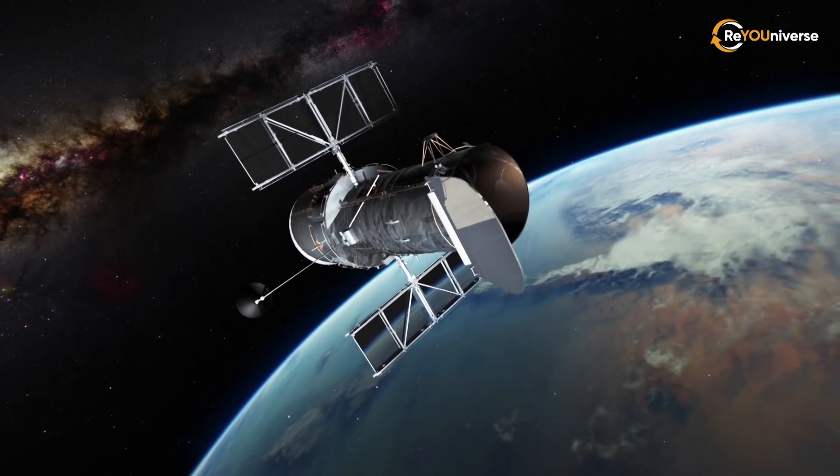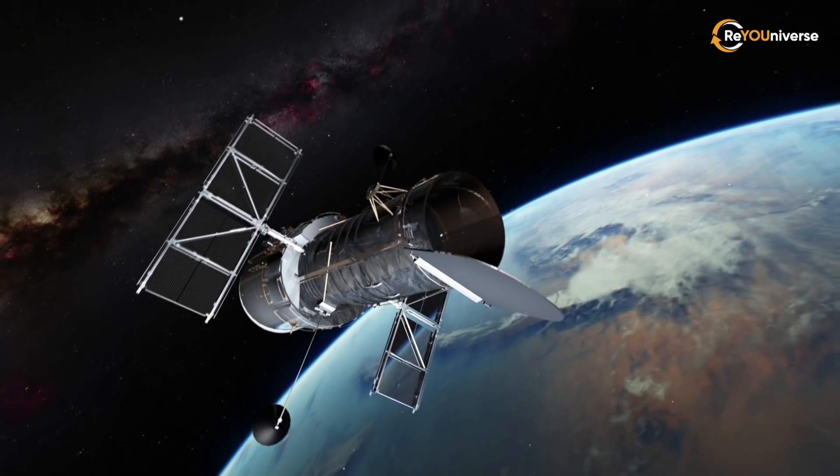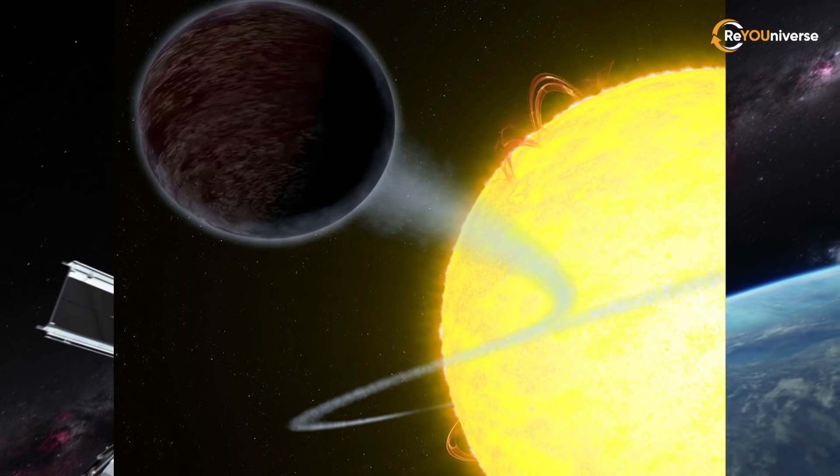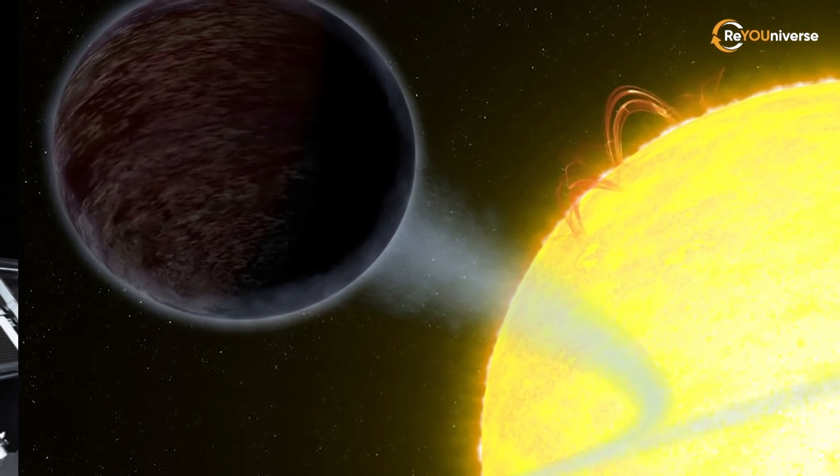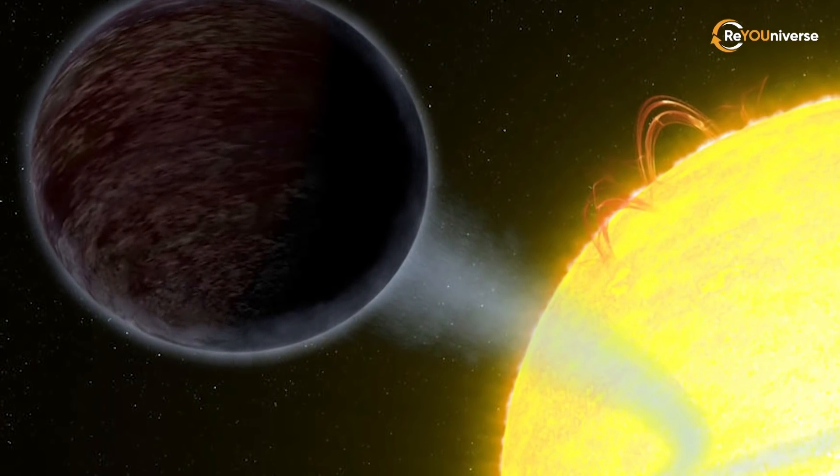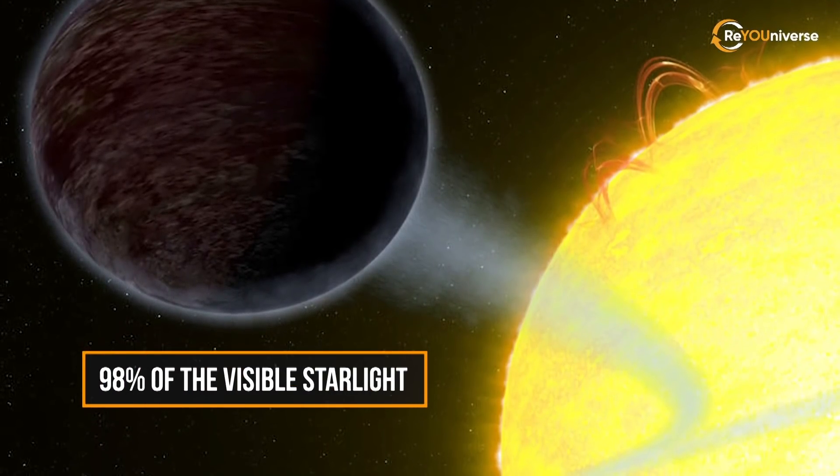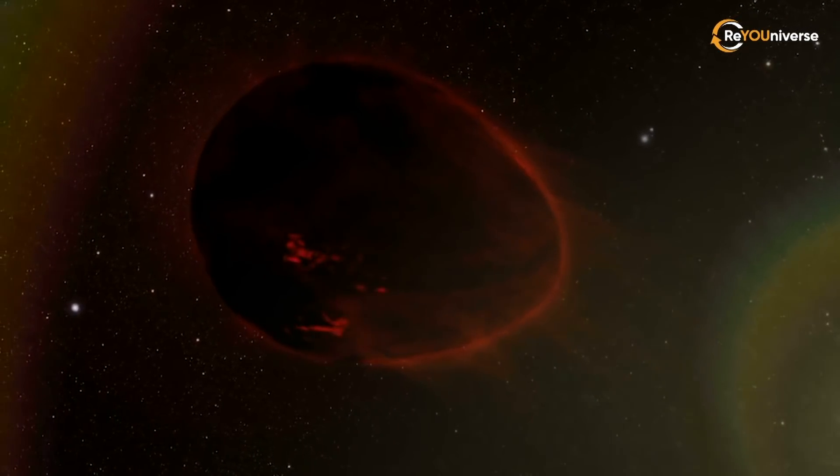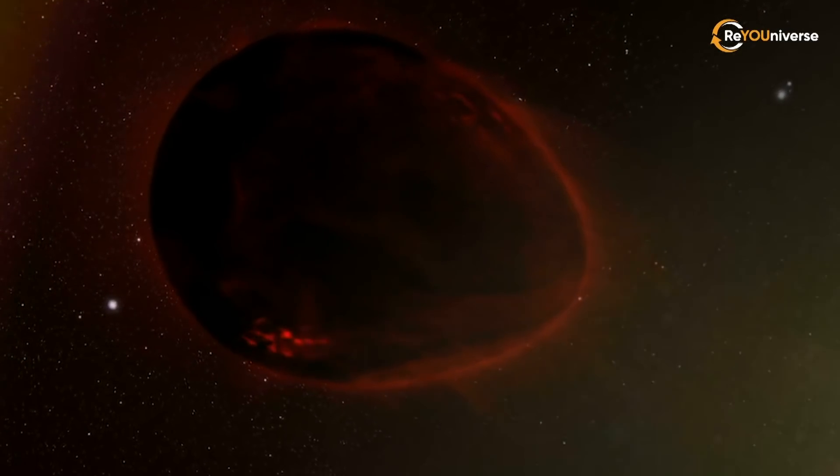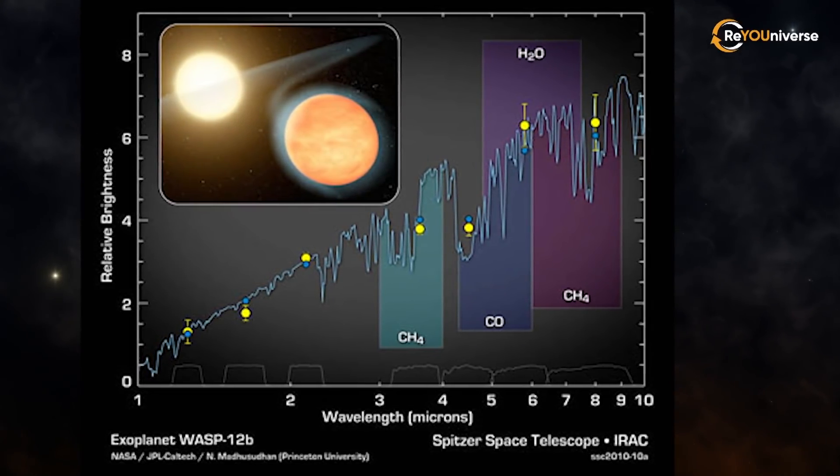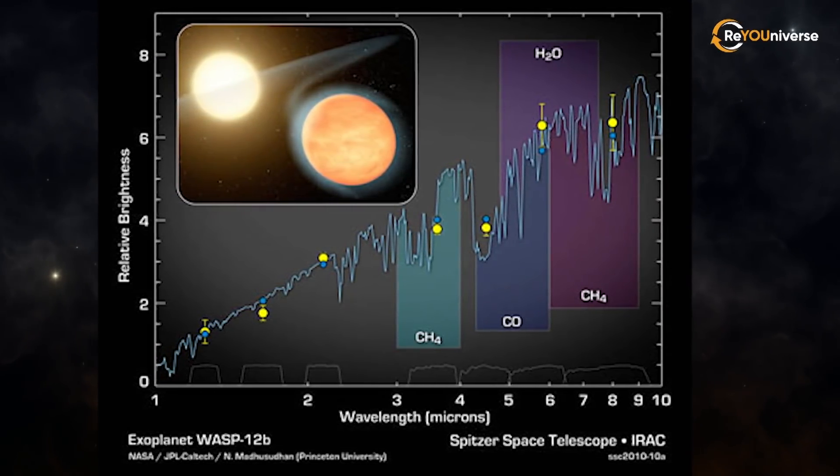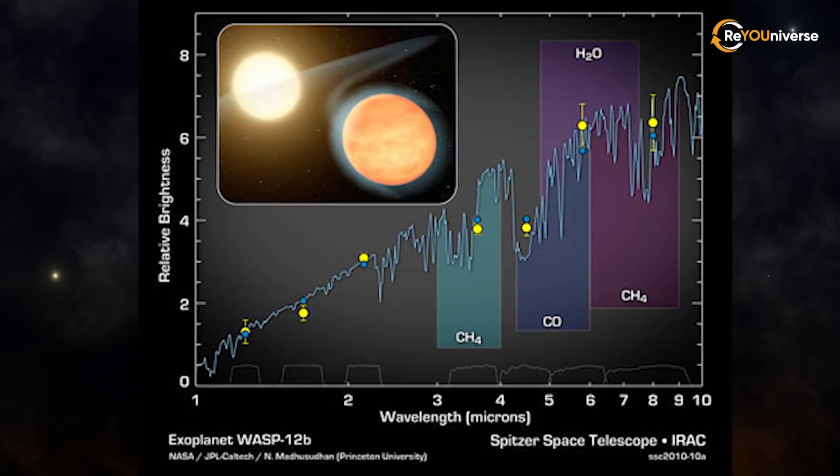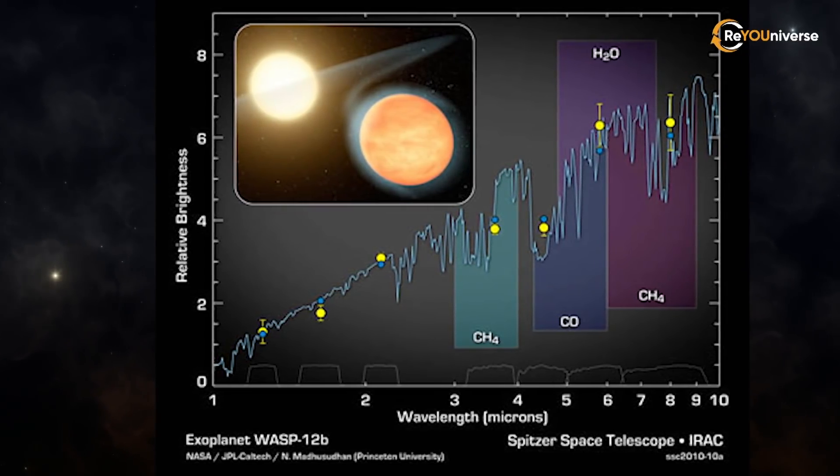NASA's Hubble Space Telescope has observed a planet outside our solar system that looks as black as fresh asphalt because it eats light rather than reflecting it back into space. This light-eating prowess is due to the planet's unique capability to trap at least 98 percent of visible starlight falling into its atmosphere. The planet's atmosphere is so hot that most molecules are unable to survive on the blistering day side of the planet. Therefore, clouds probably cannot form to reflect light back into space. Instead, incoming light penetrates deep into the planet's atmosphere, where it is absorbed by hydrogen atoms and converted to heat energy.